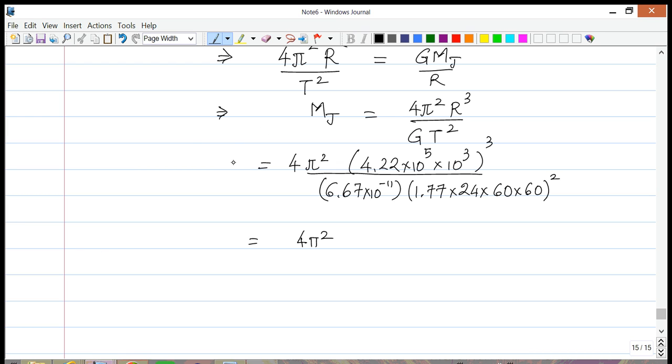Okay, so the cube of 4.22 happens to be 7.51 times 10 to the 25. I'm going to leave the 6.67 there—6.67 times 10 to the minus 11—and then I'm going to first find this number inside the parentheses and square it. So that gives me 2.34 times 10 to the 10.